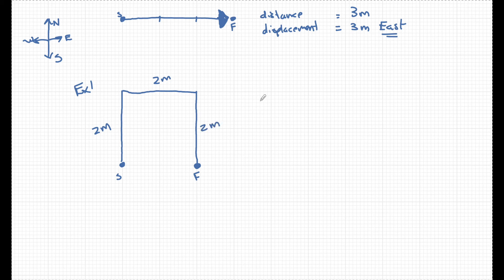What is the distance and displacement? Well, the distance we remember is the total path traveled, two, four, six meters. The displacement is the direct distance from the start to the finish. So the answer to the displacement is really going to be two meters north.